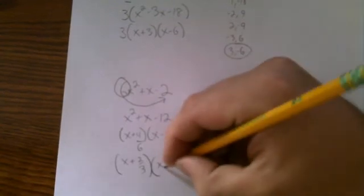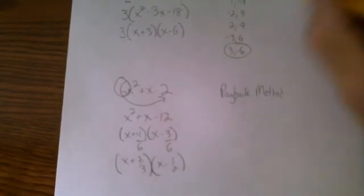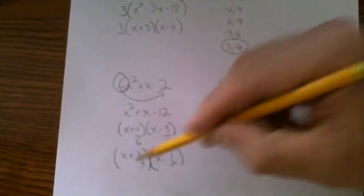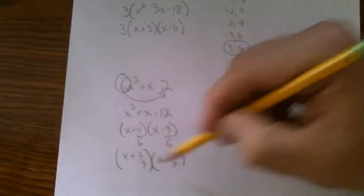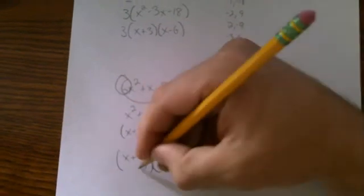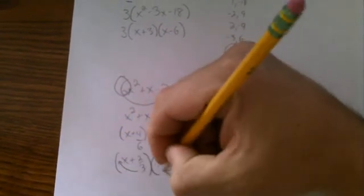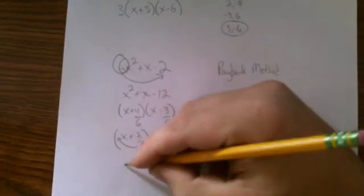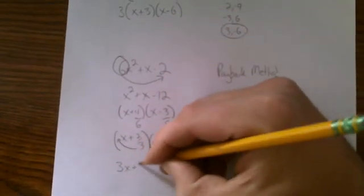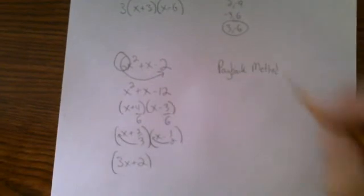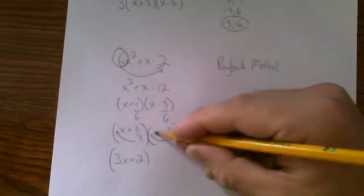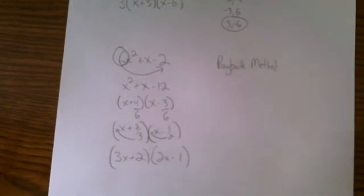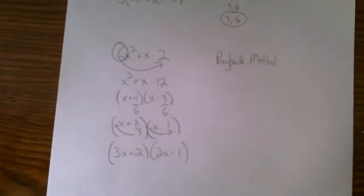And we can reduce this to 1 half. Once both fractions are reduced completely, if there are any remaining denominators, they simply go in front of the coefficient. So the 3 becomes a coefficient of x. So we end up with 3x plus 2. The 2 becomes a coefficient of x over here. So we end up with 2x minus 1. And this is factored completely.